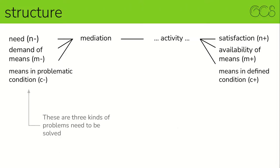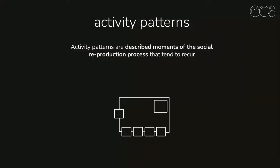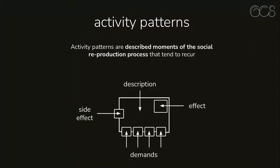So these are three examples of types of problems in the social process of reproduction that need to be resolved. All three types of problems are solved by activities. The question now is how can these activities be organized on a pure level? This brings us to activity patterns. Activity patterns are described moments of the social reproduction process that tend to recur. Every activity, and thus every activity pattern, has a description — in effect, the reason for carrying out this activity. Most activities have demands necessary to perform them, and some activities have side effects created by the activity but not needed for the process of need satisfaction.